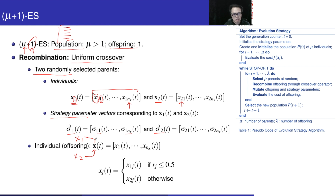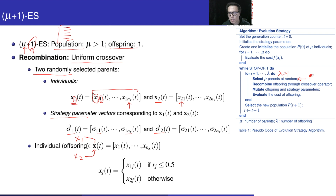x1 and x2 will generate one offspring, which we denote as x. Referring to the pseudocode, mu is more than one and lambda equals one, so we generate one offspring. The row here equals two because each time we select only two parents. At this point, we perform crossover based on x1 and x2 corresponding to each element. For example, at position j, we have x1j and x2j at iteration t.